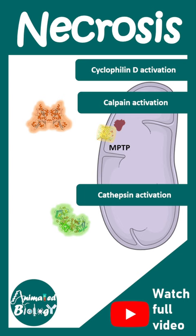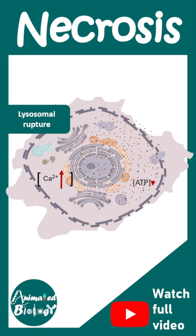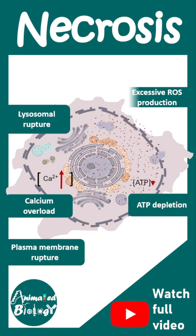There is a dissipation of the mitochondrial proton gradient and alteration of mitochondrial membrane potential. Other features involve lysosomal rupture, calcium overload, plasma membrane rupture, ATP depletion, and excessive ROS production.